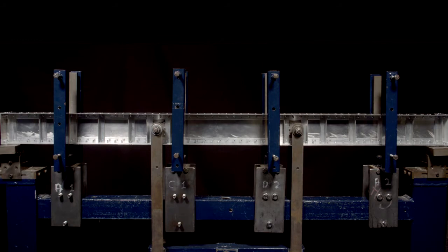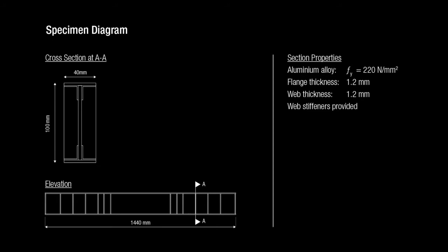This video shows a plate girder being tested under bending. The material used in this test is an aluminum alloy. The web has shear stiffness to prevent it from buckling.